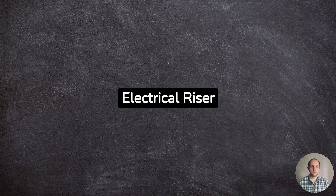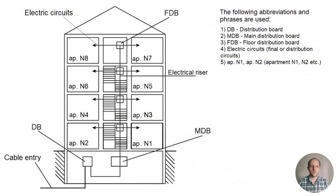Electrical riser diagram. An electrical riser diagram is a schematic illustration of the electrical system of a building or facility, showing the distribution of power and lighting circuits from the source of supply to various loads and equipment throughout the building.